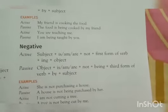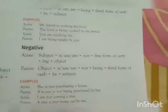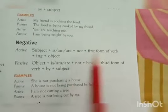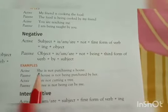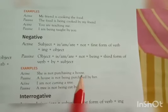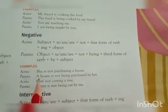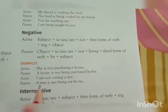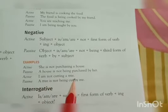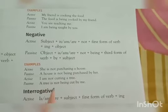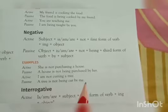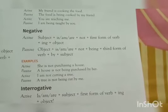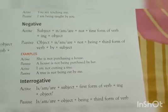Coming to the negative form of present continuous, the only addition is 'not' after is/am/are — the helping verbs. The rest of the rule remains the same. For example: 'She is not purchasing a house' becomes 'A house is not being purchased by her.' 'I am not cutting a tree' becomes 'A tree is not being cut by me.' These are the negative sentences of present continuous form.